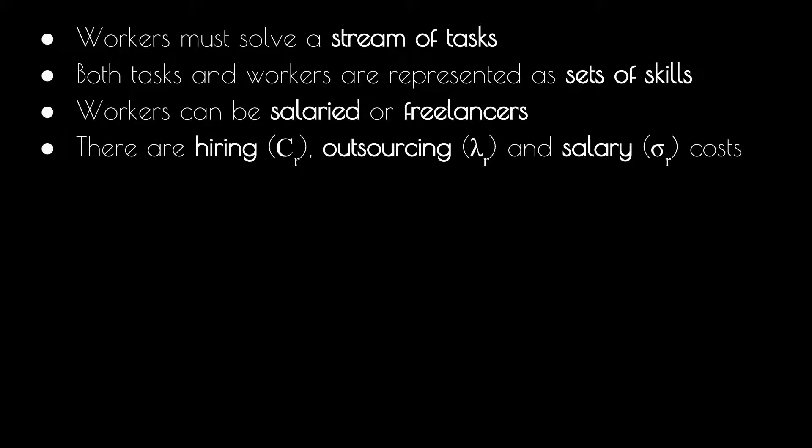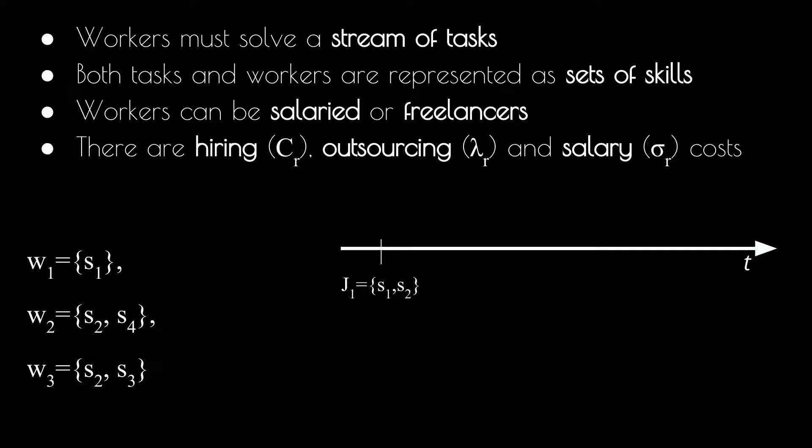Let's give an example for concreteness. Suppose there are three people, W1, W2, and W3, each one having a unique set of skills. Now, suppose Job 1 arrives. To solve this job, we will outsource to workers W1 and W2, who together possess the skills required for this task. We pay both at their outsource rate.